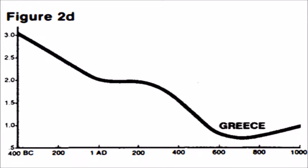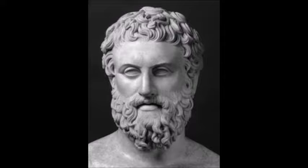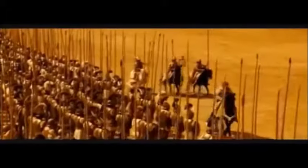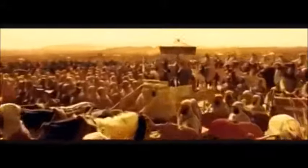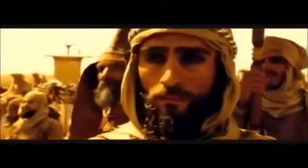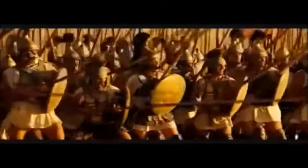Sub-replacement fertility in the Hellenistic world. The Greek historian Polybius largely blamed the decline of the Hellenistic world on low fertility rates, writing in The Histories: "In our time all Greece was visited by a dearth of children and generally a decay of population, owing to which the cities were denuded of inhabitants, and a failure of productiveness resulted, though there were no long-continued wars or serious pestilences among us. For this evil grew upon us rapidly and without attracting attention, by our men becoming perverted to a passion for show and money and the pleasures of an idle life, and accordingly either not marrying at all, or, if they did marry, refusing to rear the children that were born, or at most one or two, for the sake of leaving them well off or bringing them up in extravagant luxury."